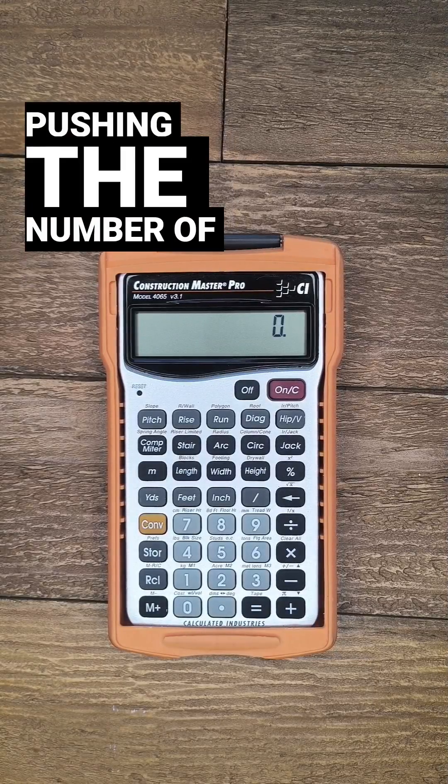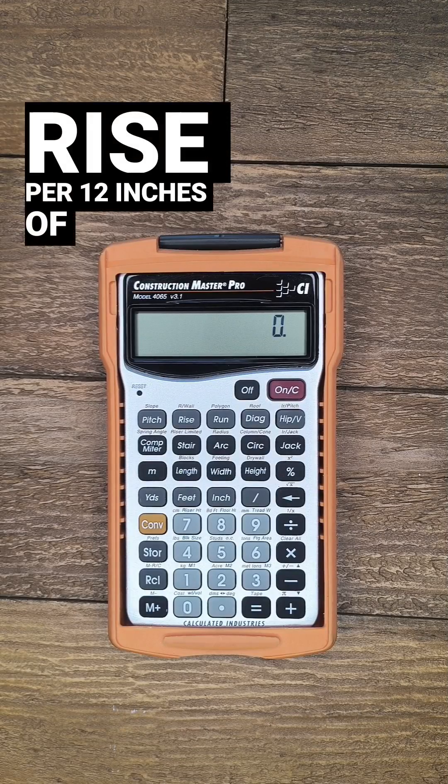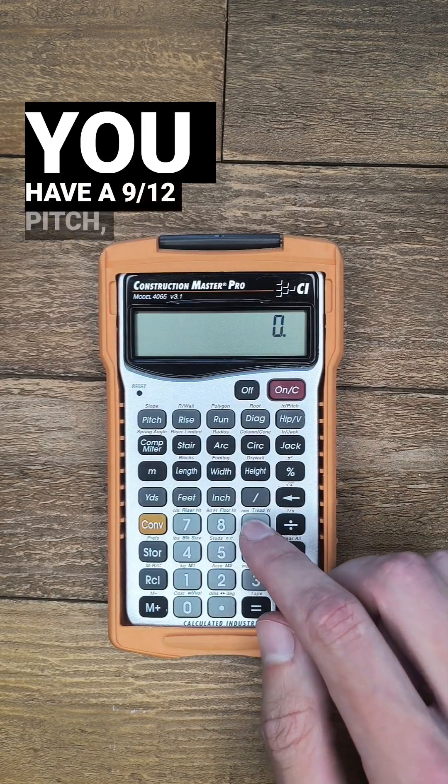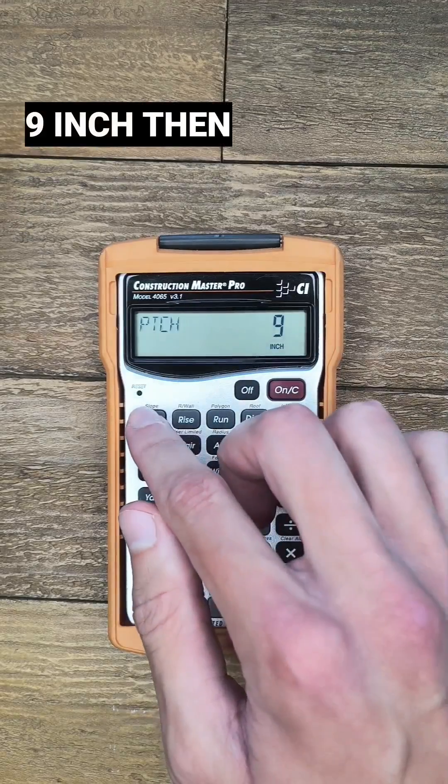The pitch is entered by pushing the number of inches of rise per 12 inches of run. So if you have a 9-12 pitch, you'd push 9 inch then pitch.